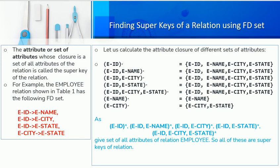First of all, we need to find a super key. The basic method is the closure method, which we have already seen in the previous video. We find a closure of any attribute. If we have a relation given, there will be some functional dependencies or conditions. We will find a closure of any attribute.